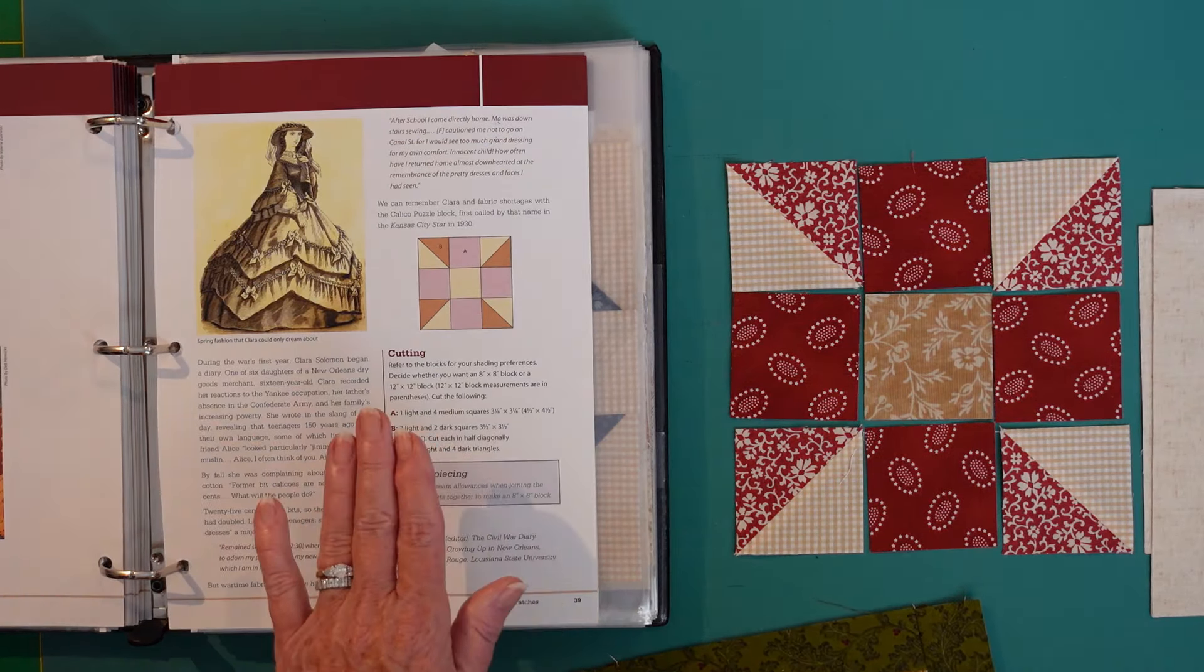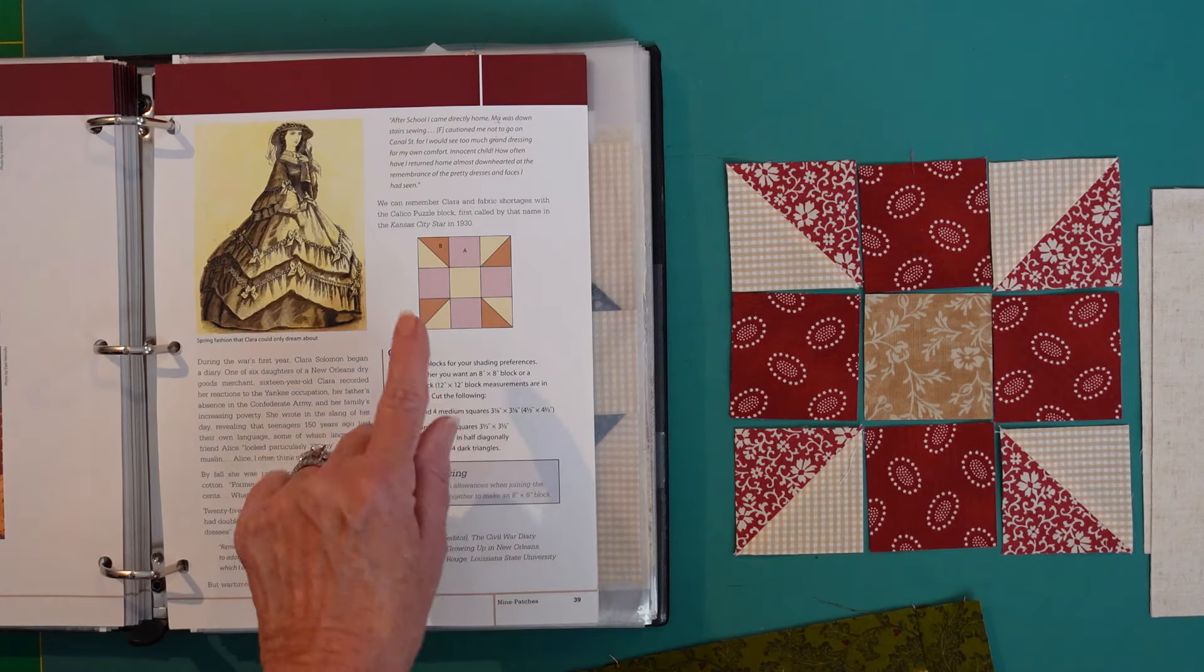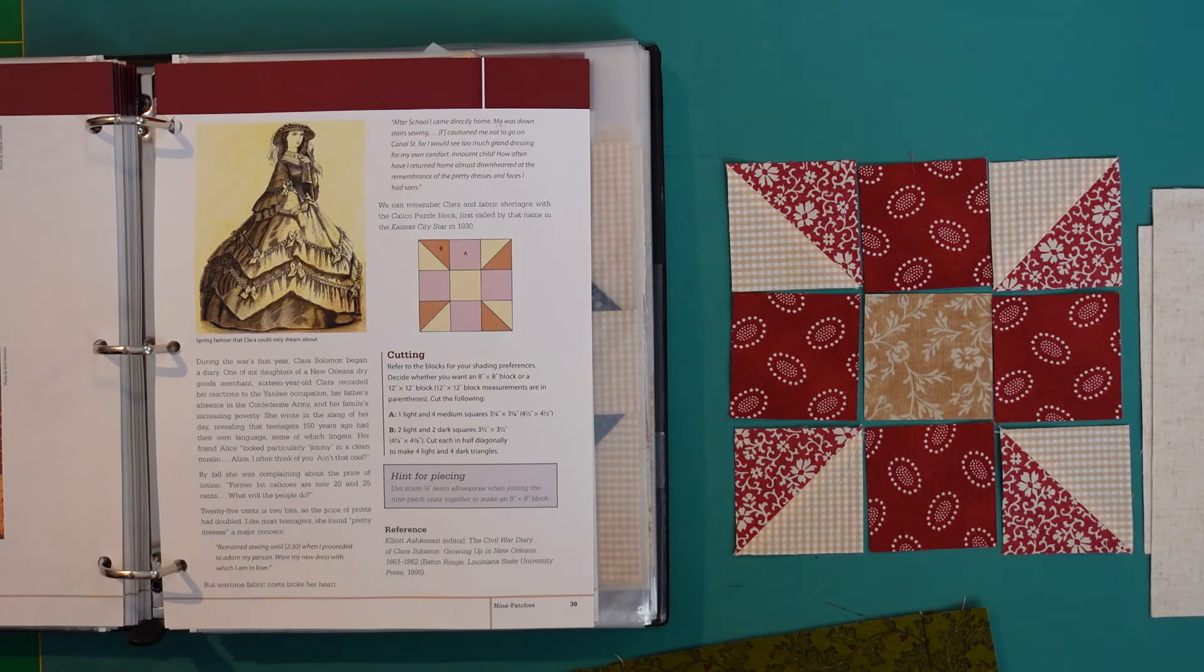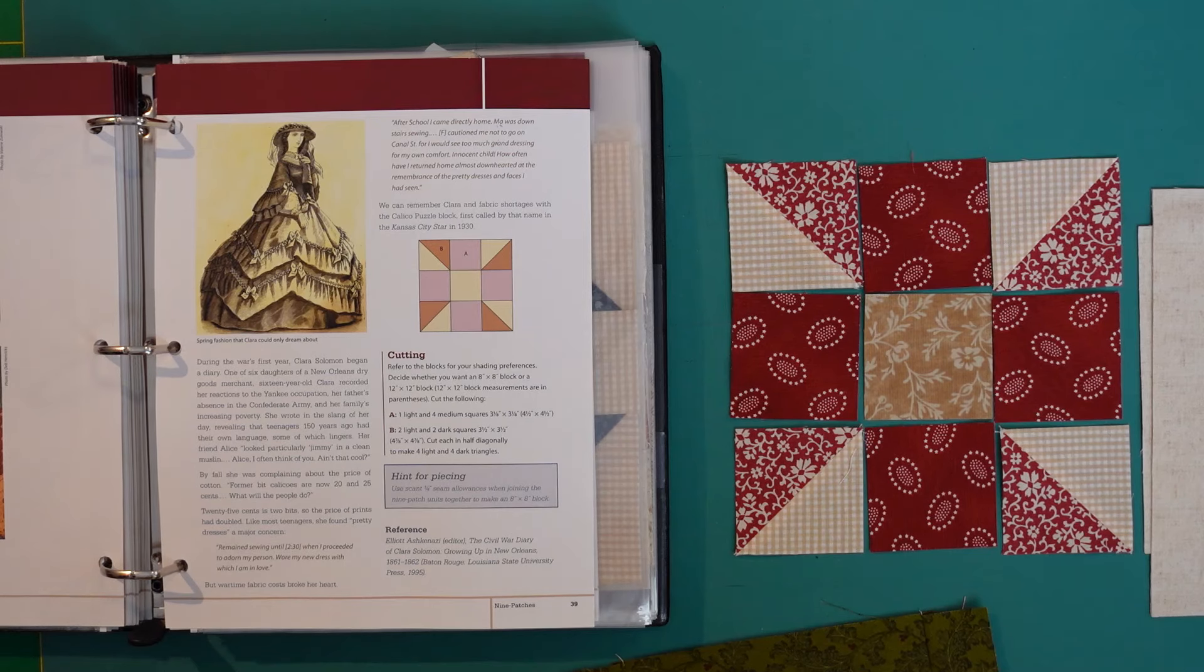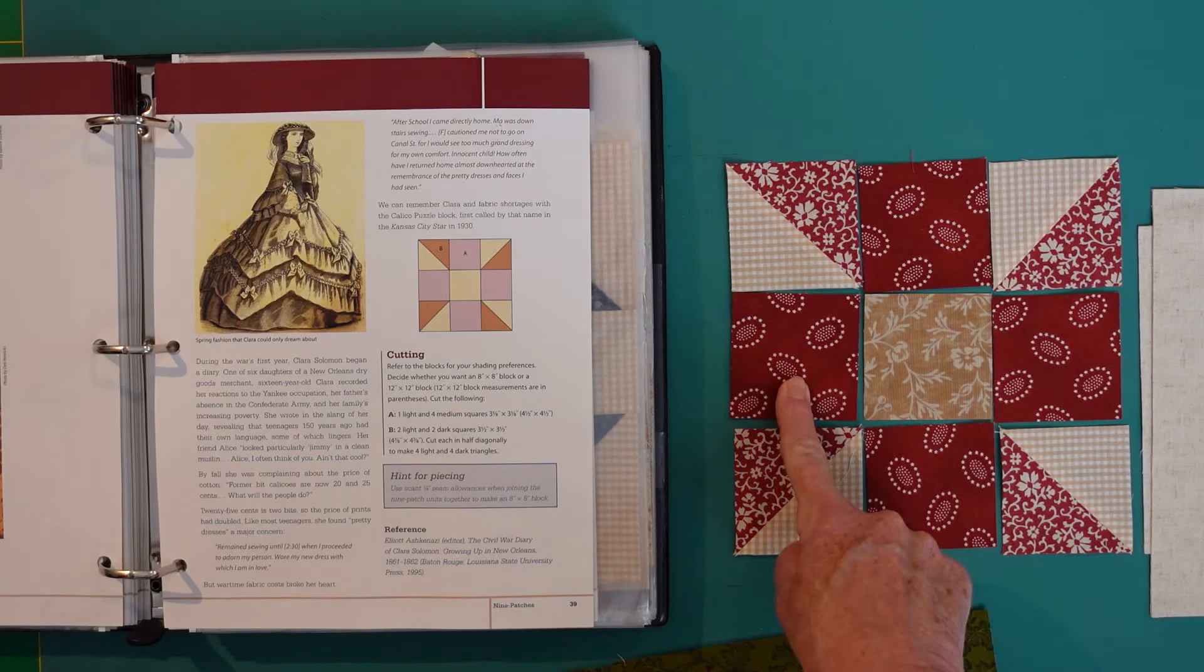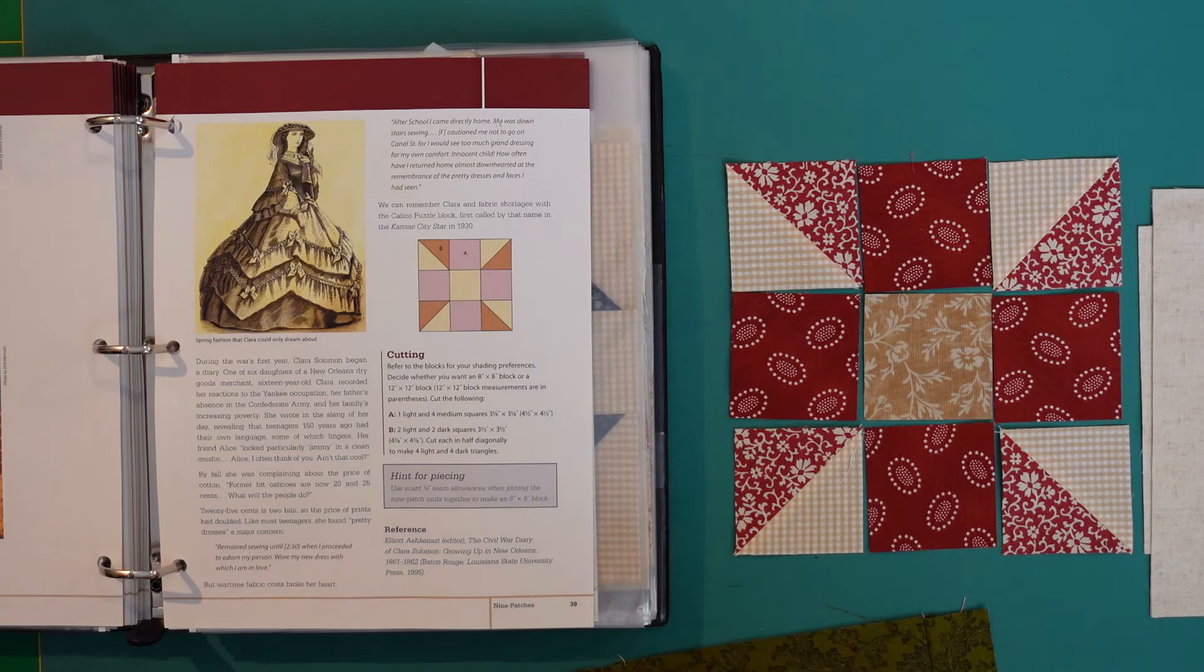This is your calico puzzle block number 17 and you can put it together following the cutting instructions in the book. If you do that, the squares each one will need to measure 2⅔ inches. If you reduce the size and make it a 6 inch, each one of these finished would be 2 inches or cut 2½.